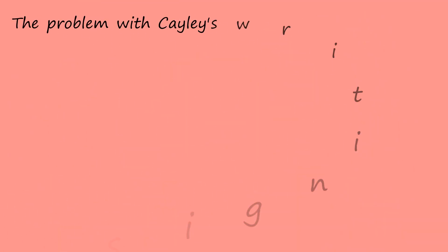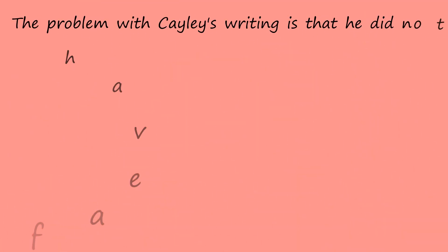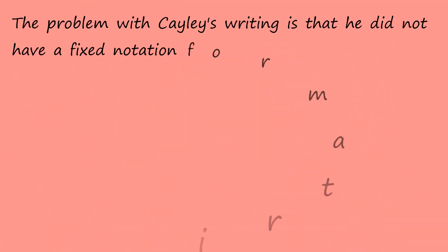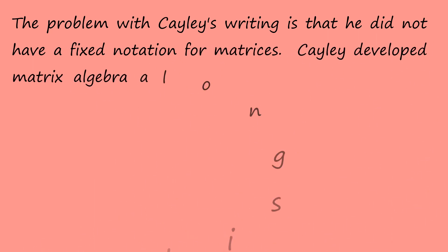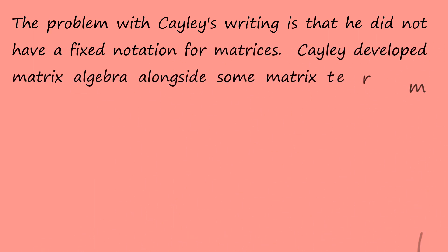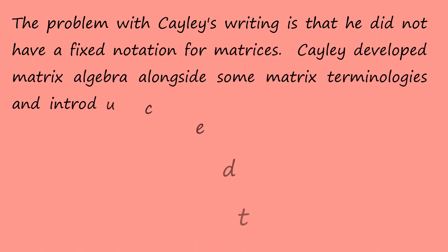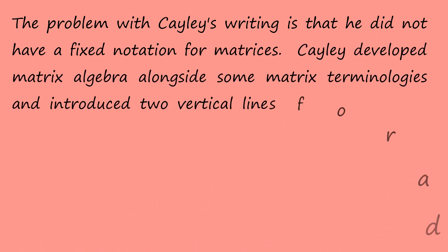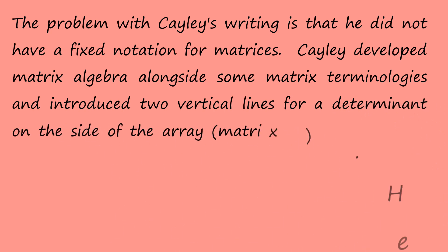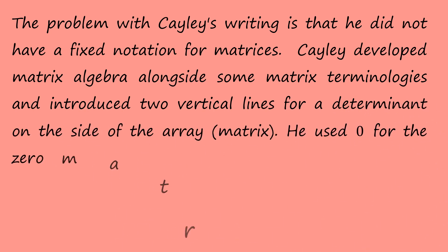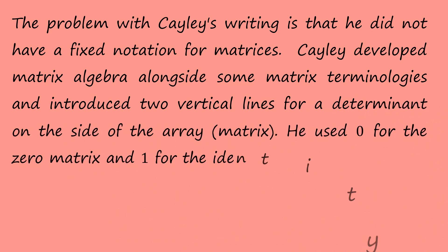The problem with Cayley's writing is that he did not have a fixed notation for matrices. Cayley developed matrix algebra alongside some matrix terminologies and introduced two vertical lines for a determinant on the side of the array. He used zero for the zero matrix and one for the identity matrix.